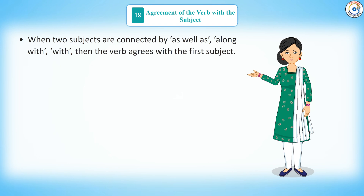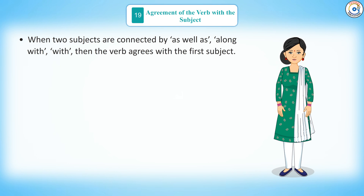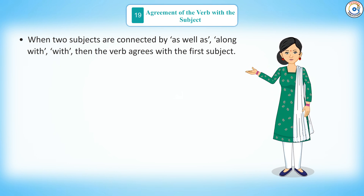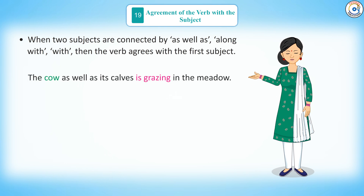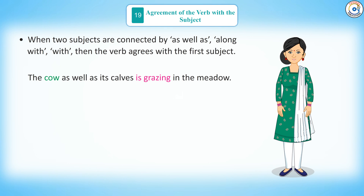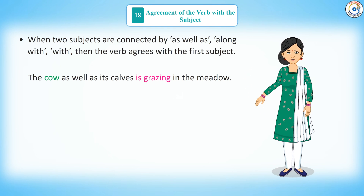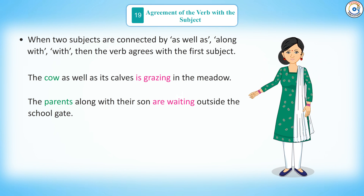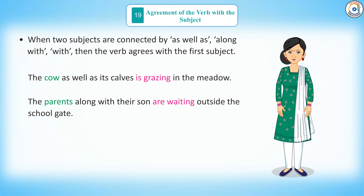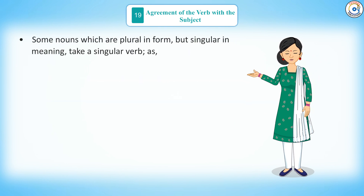Rule 6: when two subjects are connected by 'as well as', 'along with', or 'with', the verb agrees with the first subject. For example: the cow as well as its calves is grazing in the meadow; the parents along with the son are waiting outside the school gate.